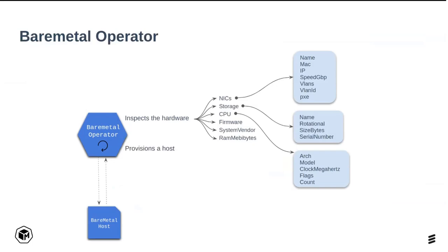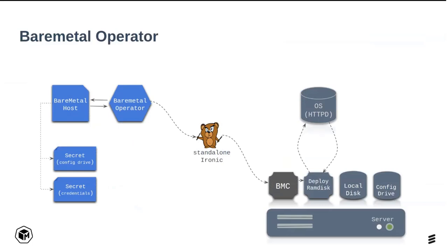The second operation the Bare Metal Operator can do is provision the host — you give it an image and it ensures Ironic writes that image to disk and reboots your server to boot that specific image. The third operation is disk cleaning, which usually happens during provisioning and deprovisioning. There are also useful capabilities like power management — you can reboot, power on, or power off the node simply by editing the Bare Metal Host CRs.